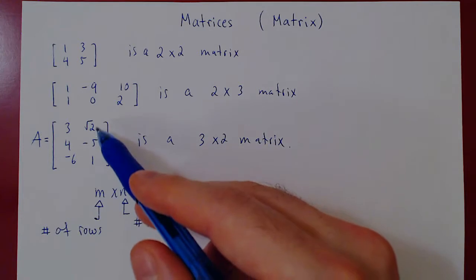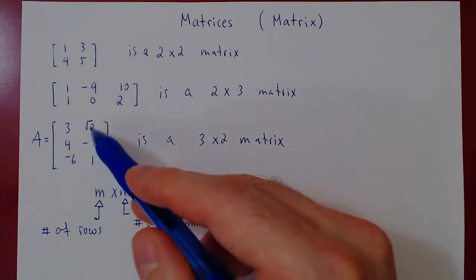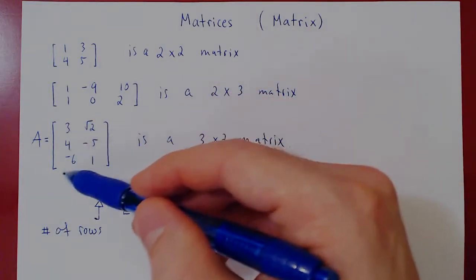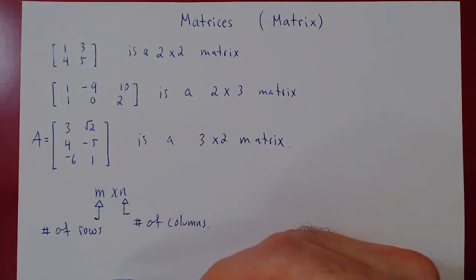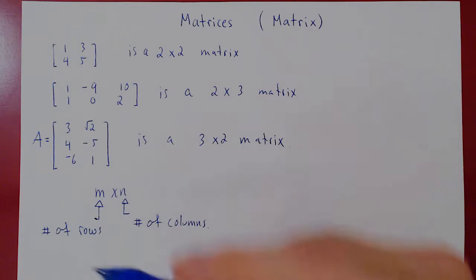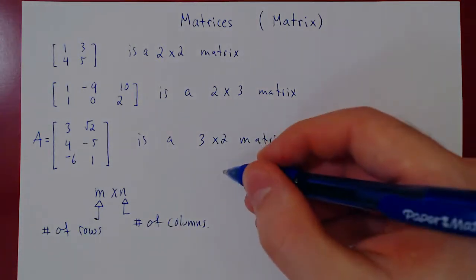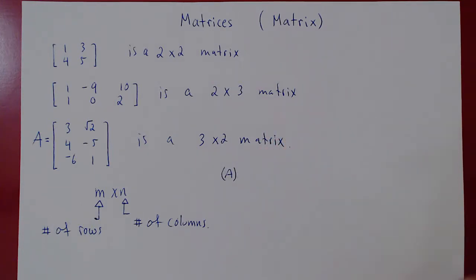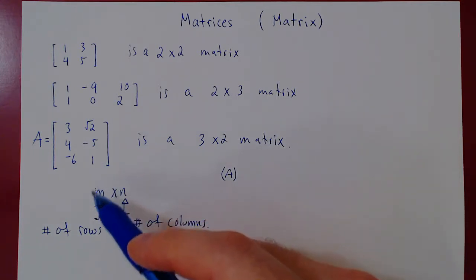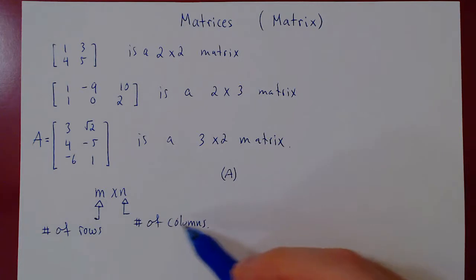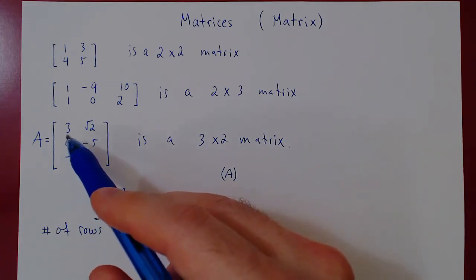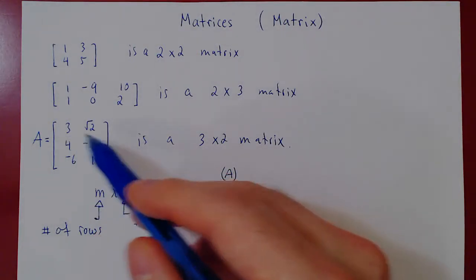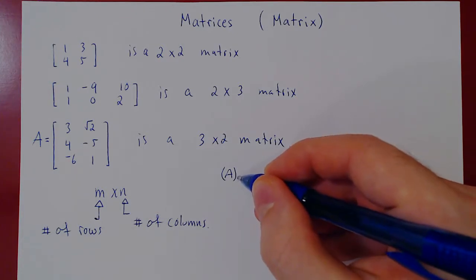We need good notation to single out specific entries of a matrix. We have to specify the row position and the column position. We can write the matrix name in round brackets with two indices — the first for the row, the second for the column. For example, the entry 4 is found in the second row, first column, so this would be the entry A(2,1).